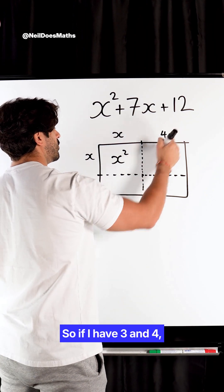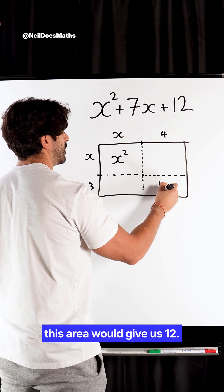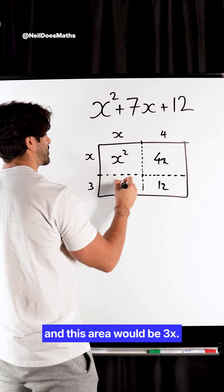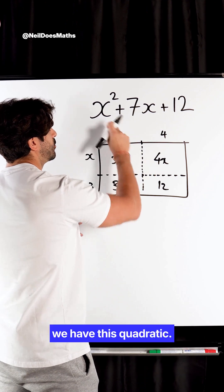So if I have 3 and 4, this area would give us 12. This area would be 4x, and this area would be 3x. And in total, we have this quadratic.